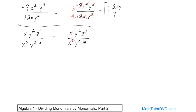Among the y's, I have y squared on top and on the bottom, so both cancel — I draw my lines through the variable name and through the exponent so I know it's all gone. Then this z on the bottom cancels with only one of the z's on top, leaving an exponent of 2 behind. So the final answer is z squared over x squared.